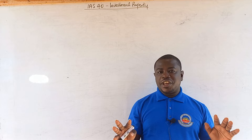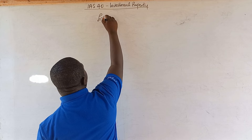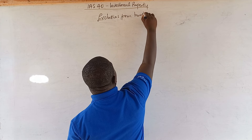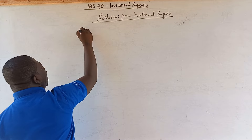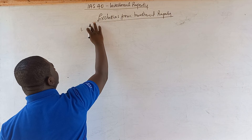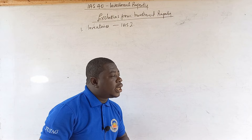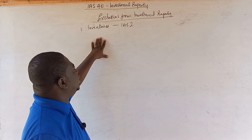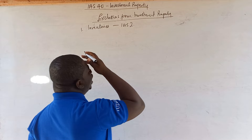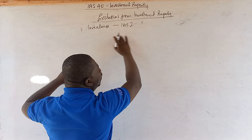The following are not investment properties. The first exclusion is inventories, which are regulated by IAS 2. Inventories are properties held for sale in the ordinary course of business. Instead of writing 'inventories,' you may see them defined in books as properties held for sale in the ordinary course of business. That is not an investment property.